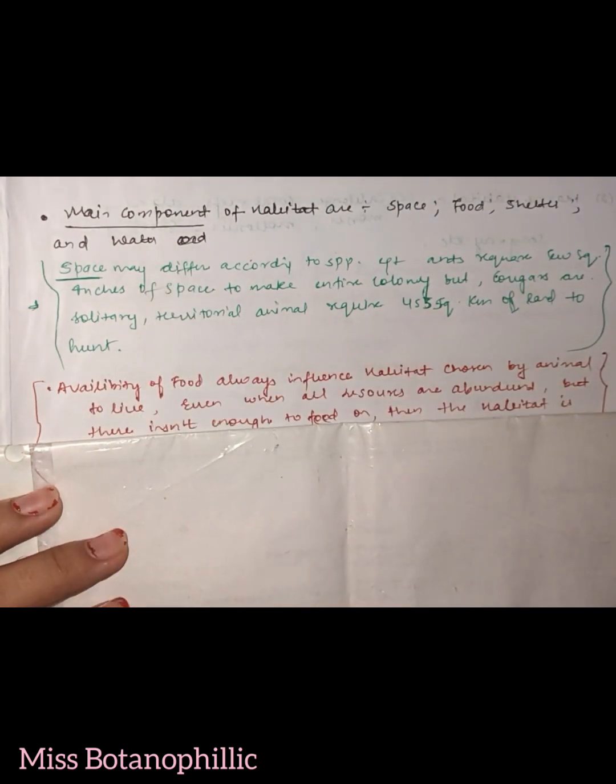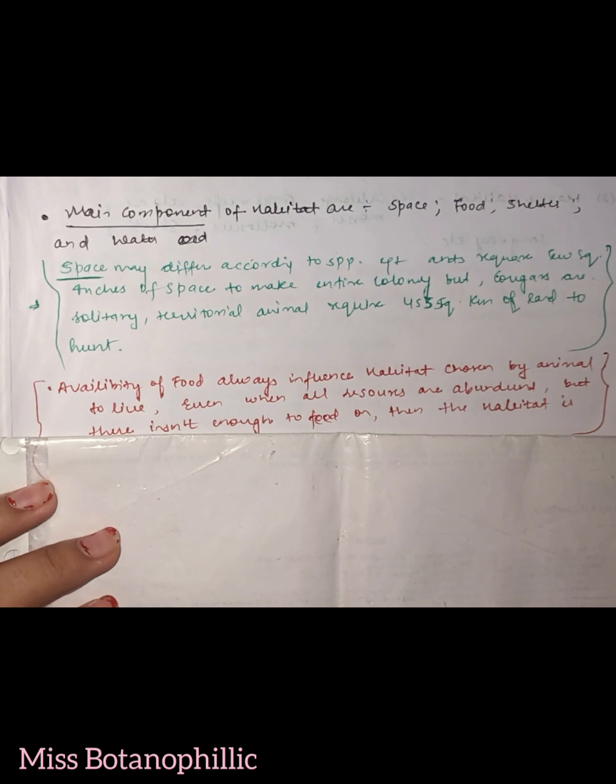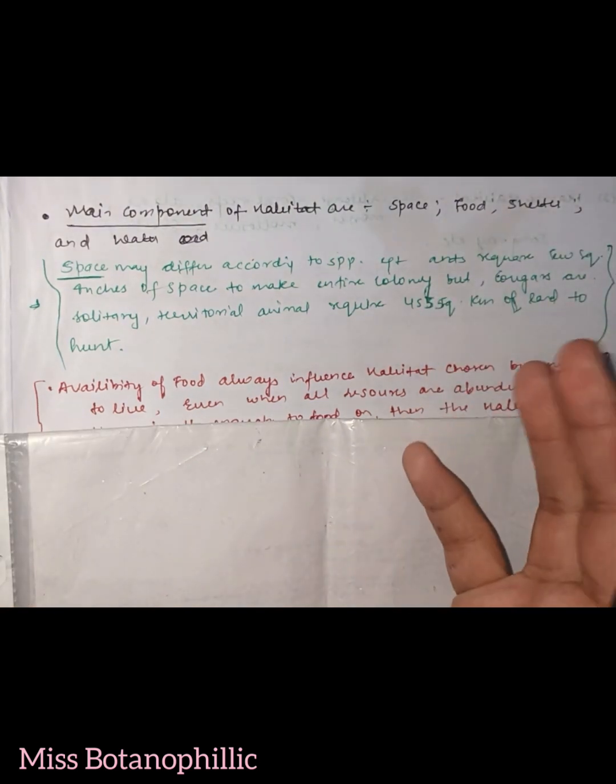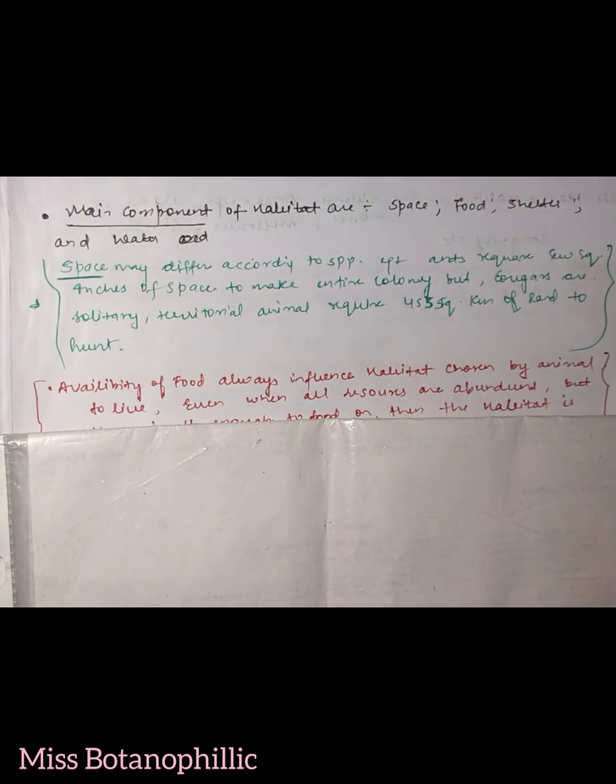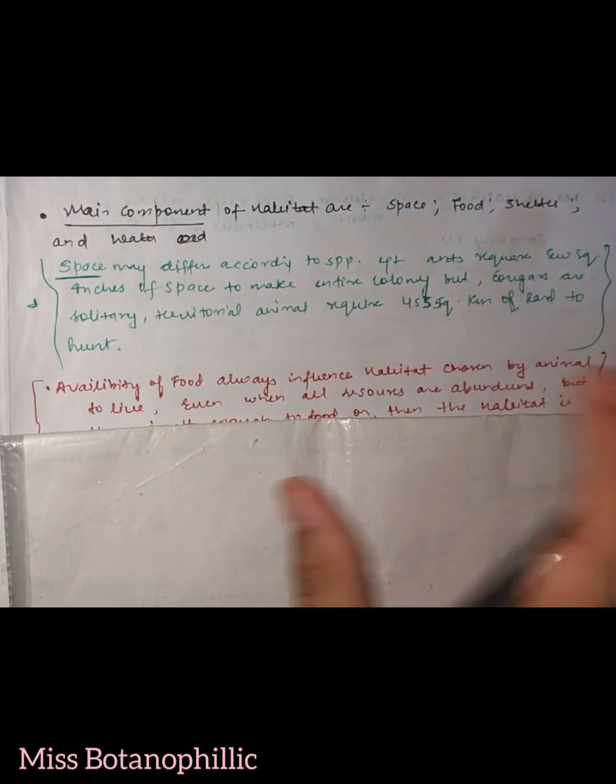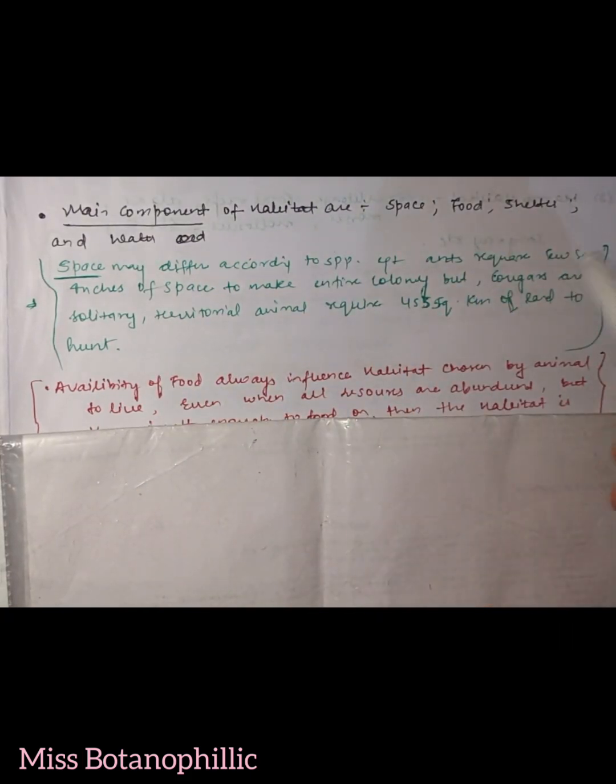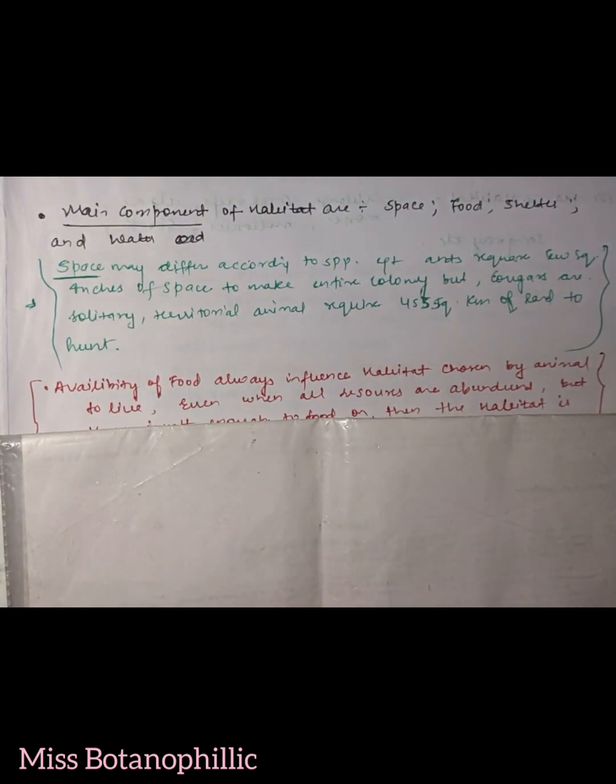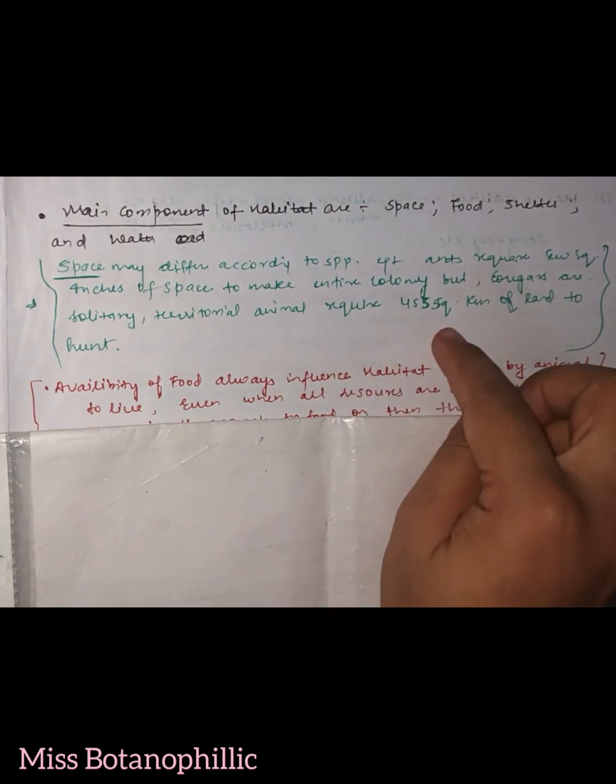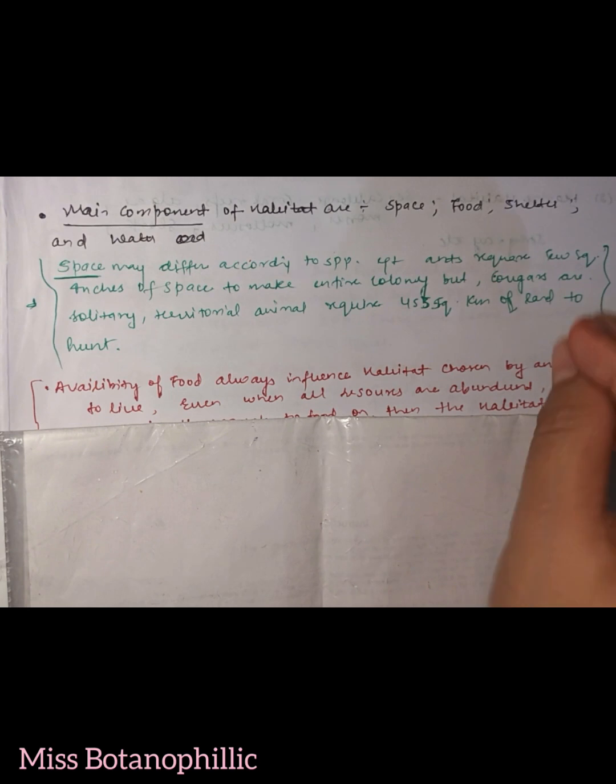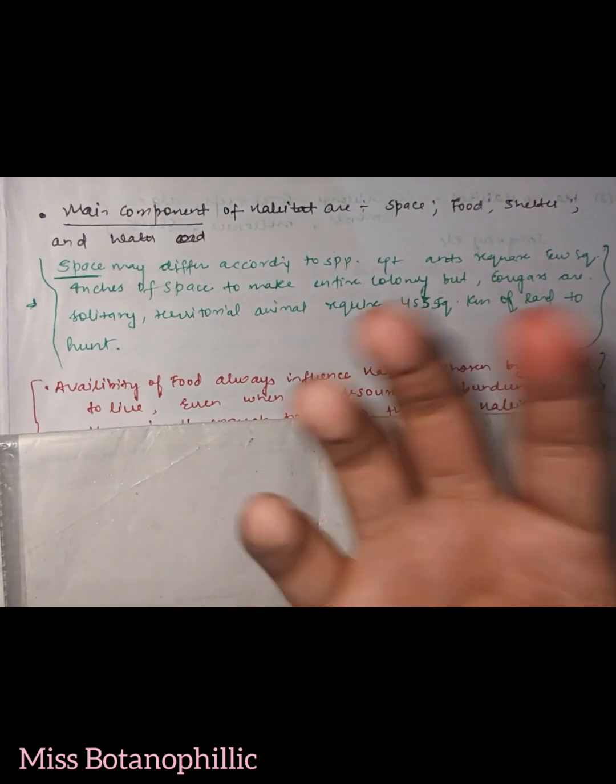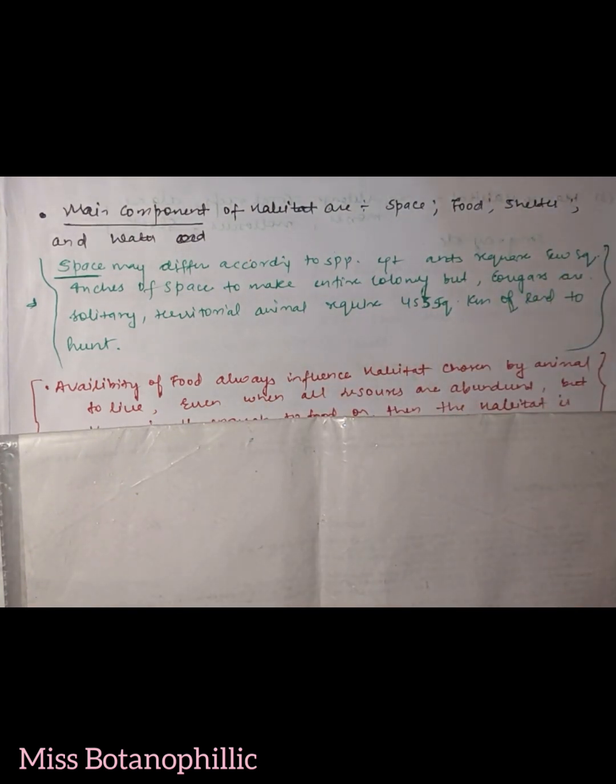but jaguars are solitary territorial animals that require 455 square kilometers of land to hunt. So generally what is being said here is that the space an organism takes also depends on its size. Ants live in colonies, but even living in colonies they only need a few square inches to live. But jaguars are territorial - they have their own territory, their own kingdom, and they like to live alone. Even then they need 455 square kilometers of area. So the space an organism takes, which we call its habitat, can vary from species to species.